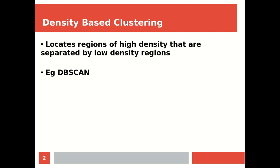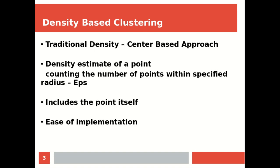This is a popular example of a density-based scanning algorithm. The traditional density center-based approach estimates density by computing the number of points within a range or distance. This range or radius is called EPS or Epsilon.